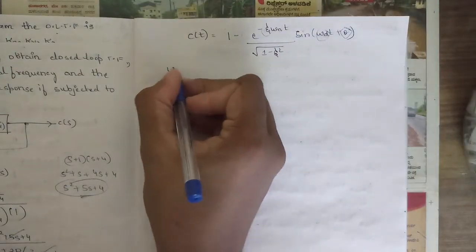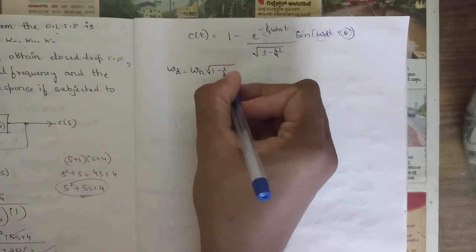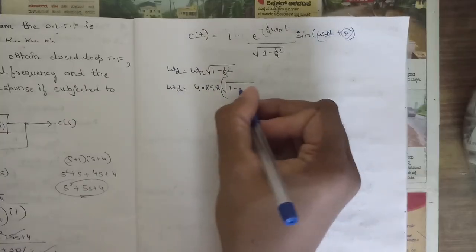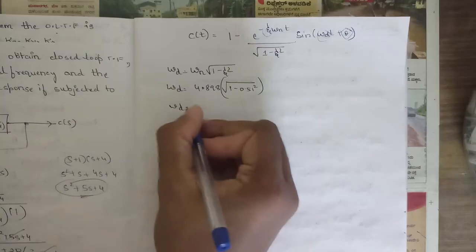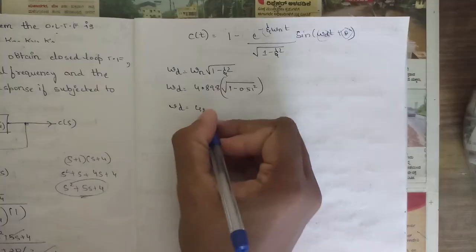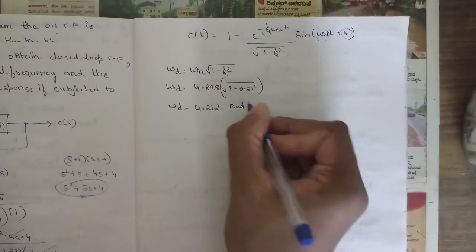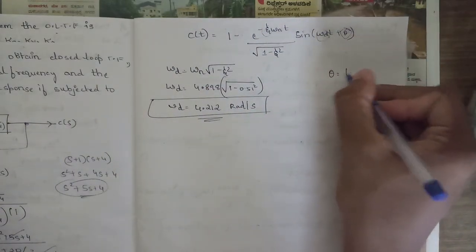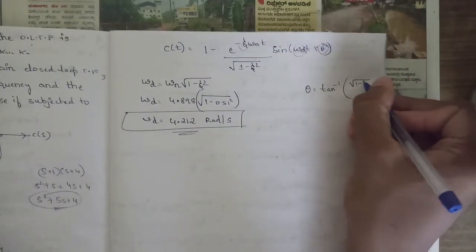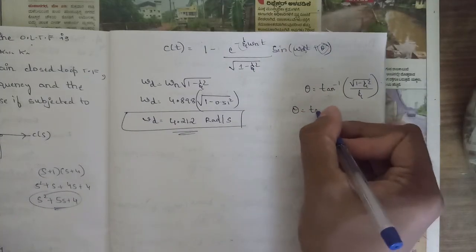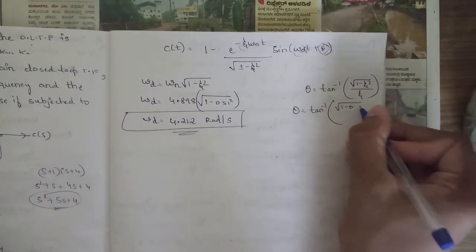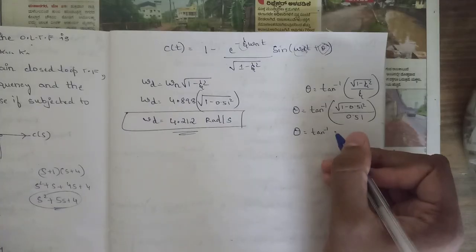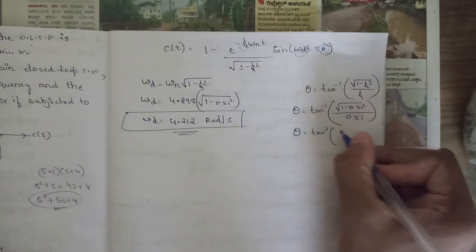The formula for ωd is ωn × √(1 − ζ²). So ωd = 4.898 × √(1 − 0.51²). Solving this gives ωd = 4.212 radians per second. For θ, the formula is tan⁻¹(√(1 − ζ²) / ζ), so θ = tan⁻¹(√(1 − 0.51²) / 0.51).